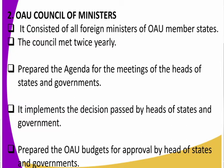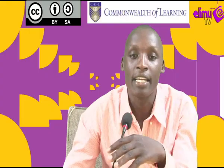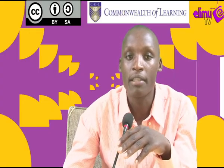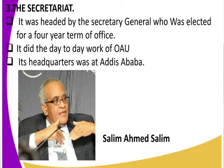The third organ is the Secretariat. The Secretariat was headed by the Secretary General, who was elected for a four-year term of office. A Secretary General holds that position for four years but can be re-elected. The Secretariat offices are in Addis Ababa, Ethiopia. The first OAU Secretary General was Salim Ahmed Salim — now the late — who served as Secretary General of OAU for a long time.